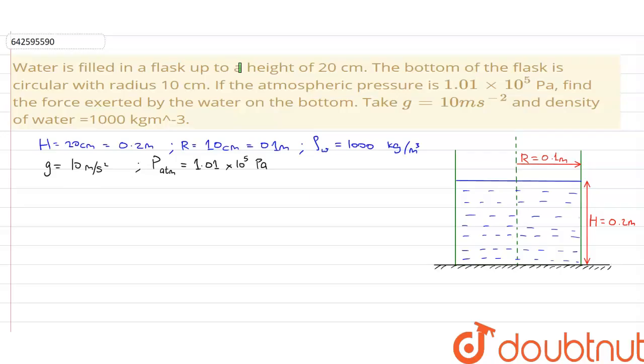The question says that water is filled in a flask up to a height of 20 centimeter. The bottom of the flask is circular with a radius of 10 centimeter. It is given that the atmospheric pressure is 1.01 into 10 to the power 5 Pascal, and we need to find the force exerted by the water on the bottom. It is given that g is 10 meter per second square and the density of water is 1000 kg per meter cube.